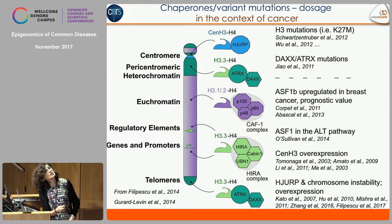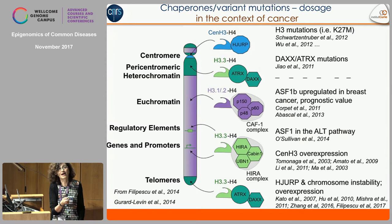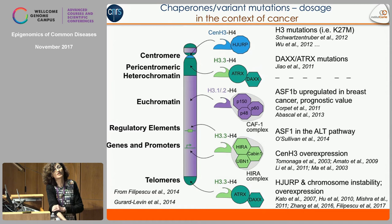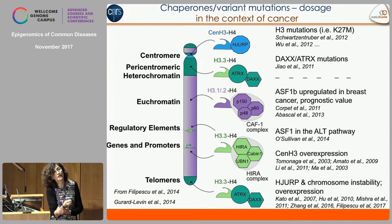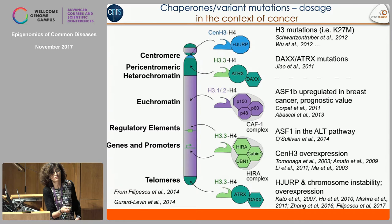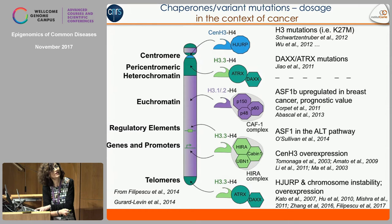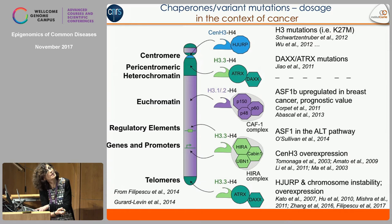There are variations on this theme in terms of mutation and dosage in the context of cancer. I must stress the case of the H3 mutation, like the K27M mutation reported in the context of very aggressive glioblastoma, drawing a lot of attention to H3 variants. There are also mutations in DAXX and ATRX associated with some of these glioblastomas, up-regulation of ASF1 in breast cancer, over-expression of CenH3 in very aggressive cancers, and HJURP associated with chromosome instability.